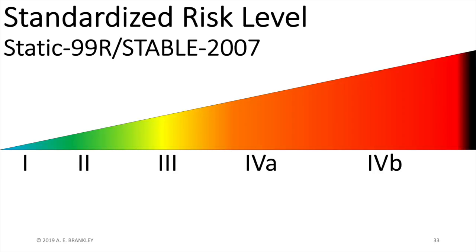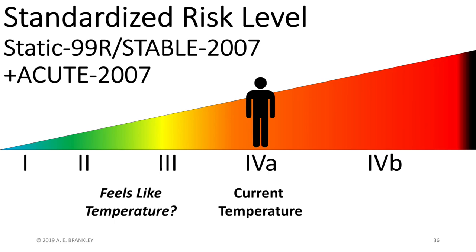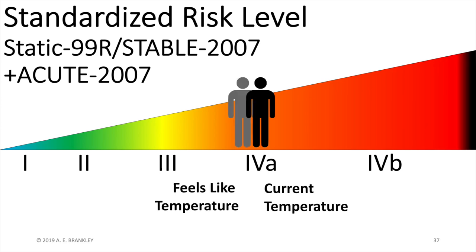My weather discussion parallels what we are doing by combining the acute. Imagine you have an individual at a static-stable level 4a - that is analogous to the current temperature. But you want to know what this individual's risk looks like day to day in the community, just like I want to know if the current temperature fairly represents what I'm going to experience when I step outside. This is where Acute 2007 can be very useful. In most cases, Acute 2007 tells me that the individual is presenting with an amount of day-to-day problems typical for someone at level 4a.